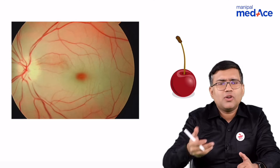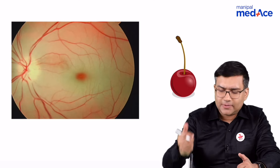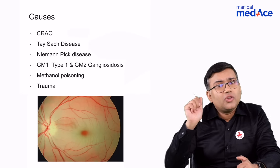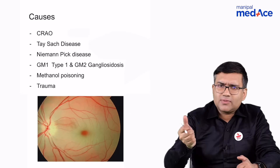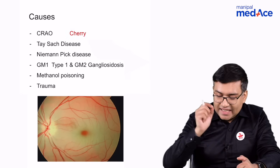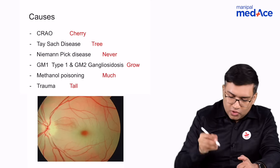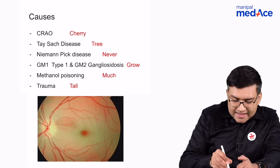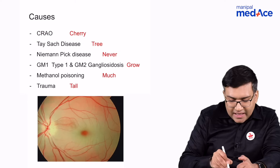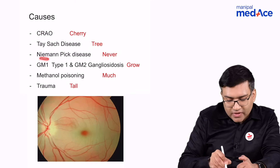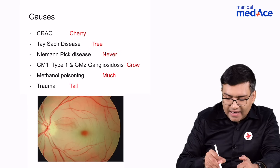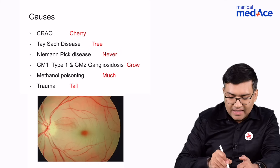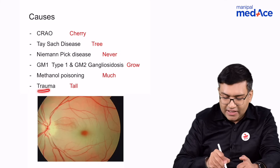The next question is: what are the various causes of cherry red spot? To remember them, I have this mnemonic: 'Cherry trees never grow much tall.' C goes with central retinal artery occlusion, T goes with Tay-Sachs disease, N goes with Niemann-Pick disease, G goes with GM1 type 1 and GM2 gangliosidosis, M goes with methanol poisoning, and T goes with trauma. With this small mnemonic you can remember the various causes of cherry red spot.